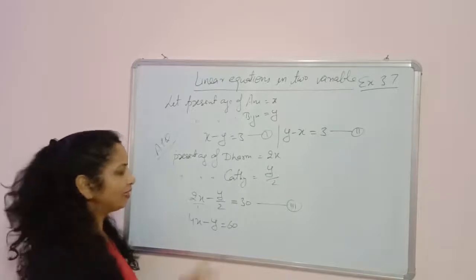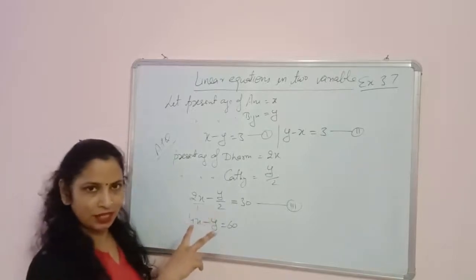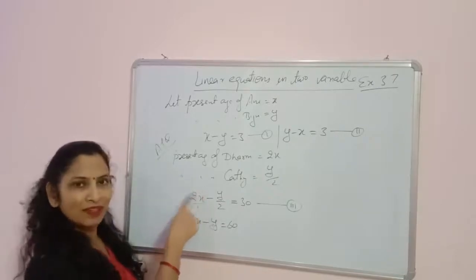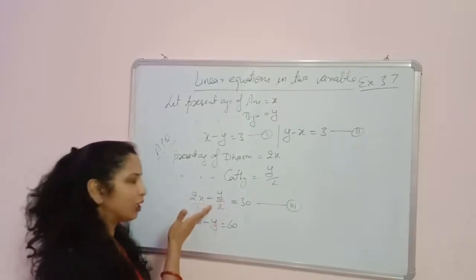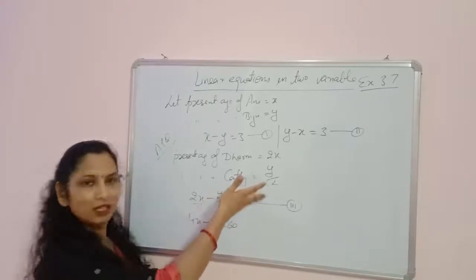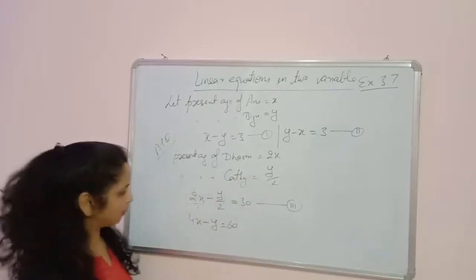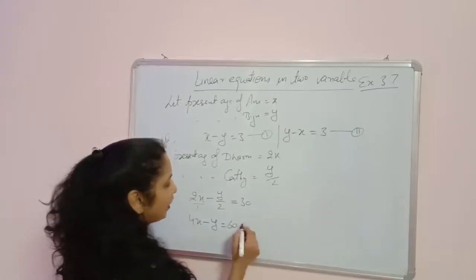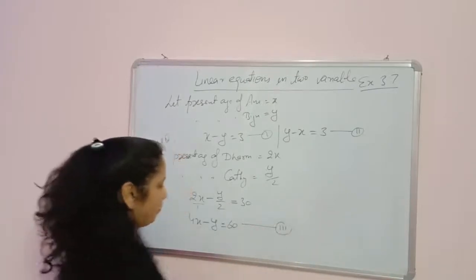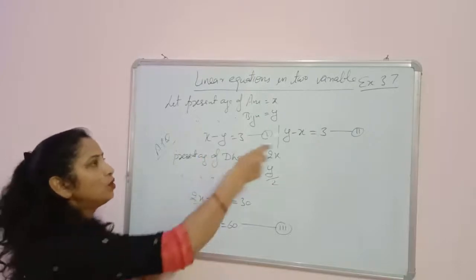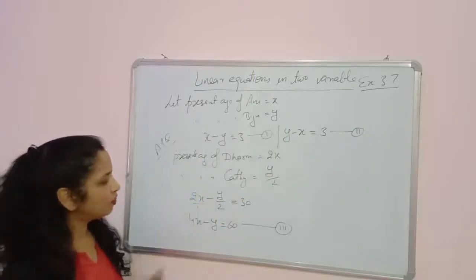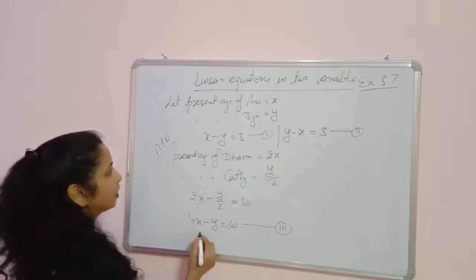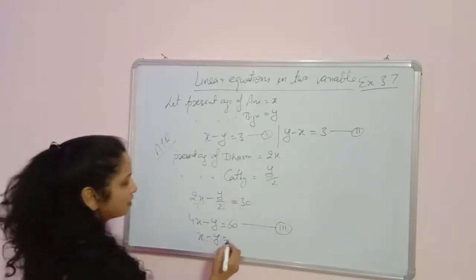We take the LCM of these terms; the LCM is 2, so we multiply by 2. Taking 2 in multiplication towards the RHS gives us 60. So equation 3 becomes 4x minus y equals 60. Now we solve this equation with equation 1: x minus y equals 3.